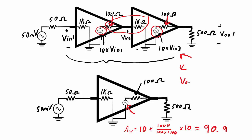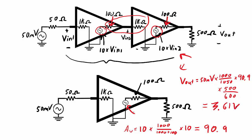To confirm, I calculate Vout using the three steps: voltage divider at the input, voltage gain inside the amplifier, and voltage divider at the output. So Vout equals 50 millivolts times 1000 over 1050, times 90.9 for the voltage gain, times 500 over 600 for the output voltage divider. Plugging those numbers in, the output voltage works out to 3.61 volts — exactly the same as when I went step by step through the two-stage amplifier. I hope these examples have put you a few steps closer to understanding general amplifier models. Thanks so much for watching.